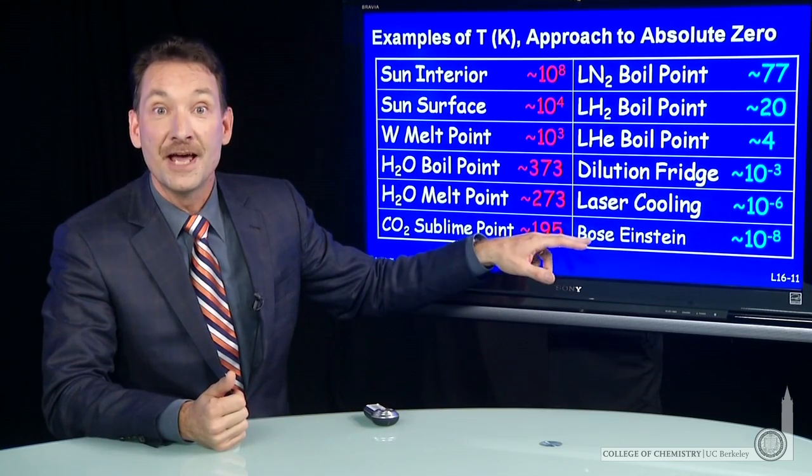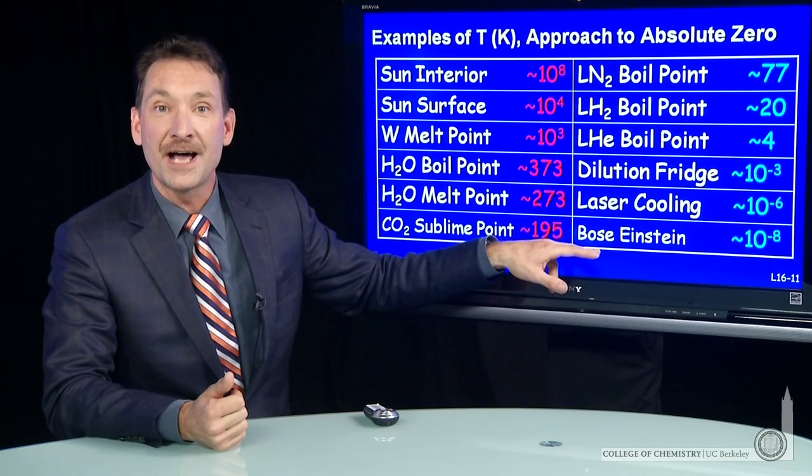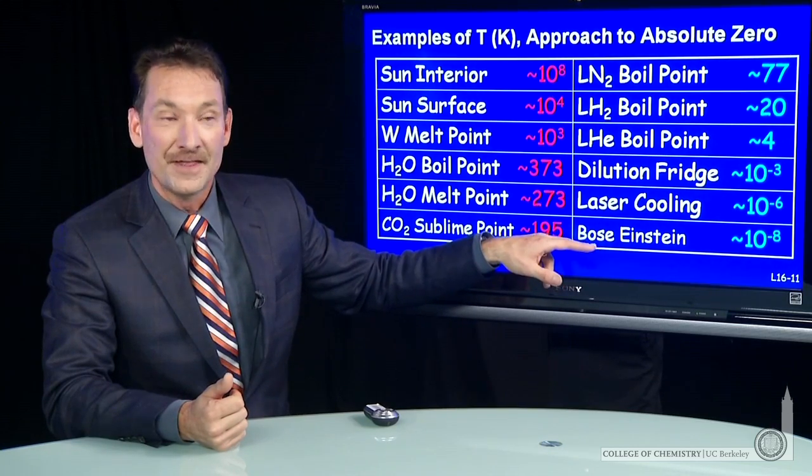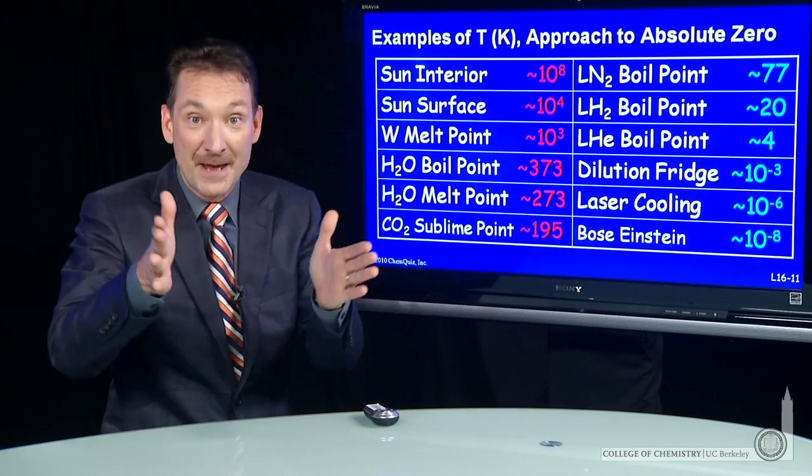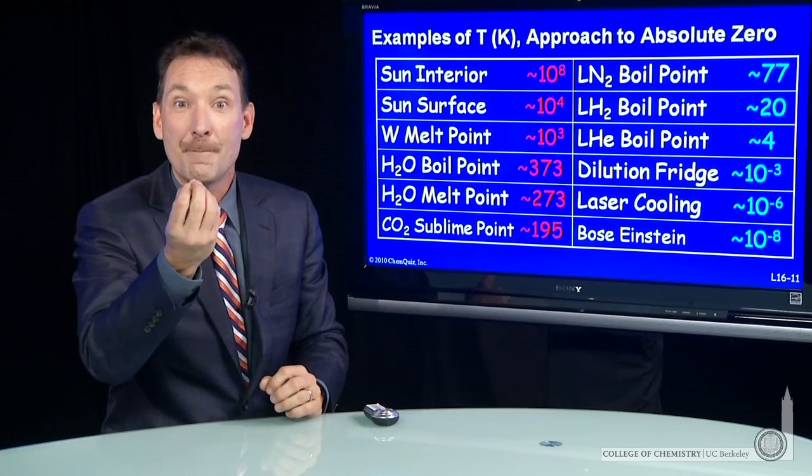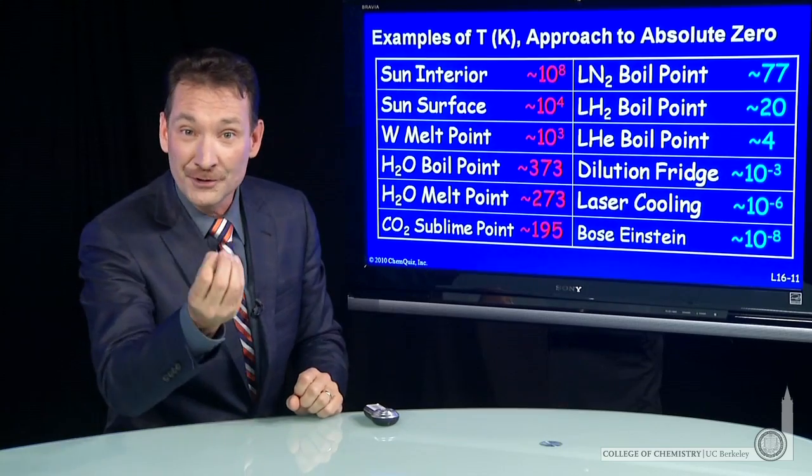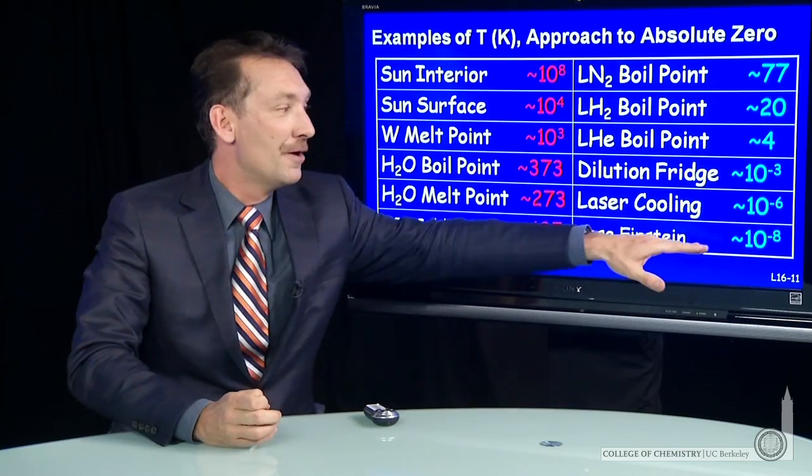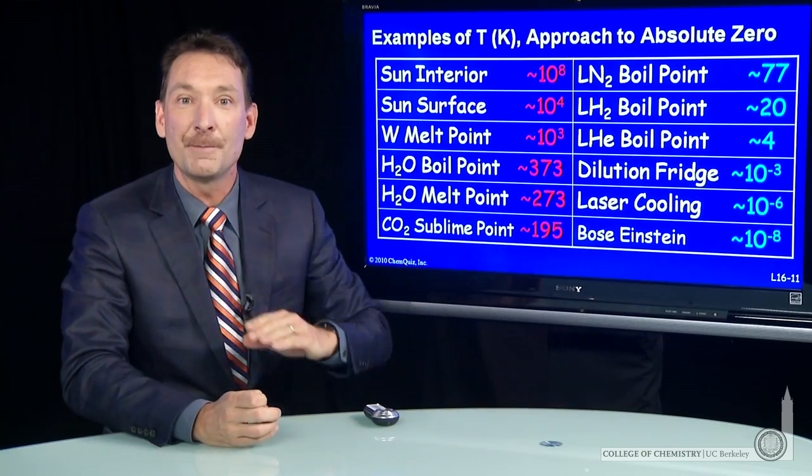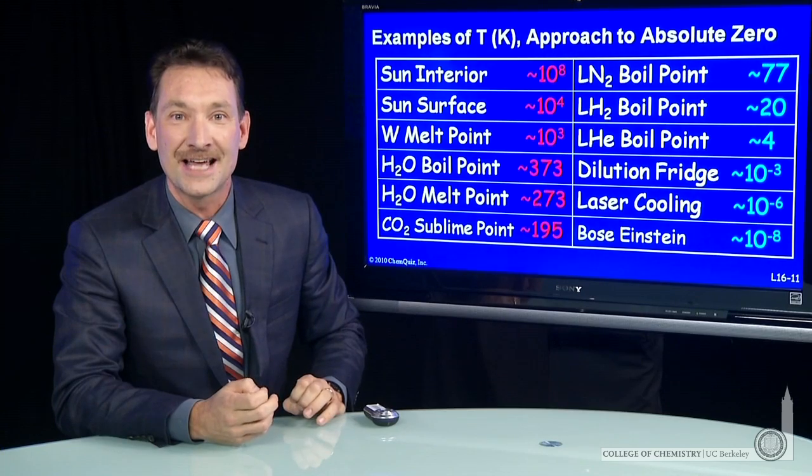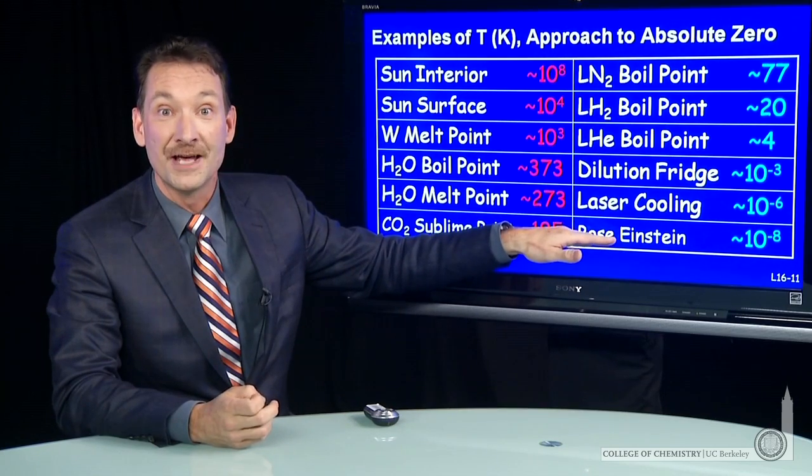Some of the coldest temperatures ever achieved are in a Bose-Einstein condensation. That's where you do laser cooling and magnetic trapping and get molecules to virtually stop, in this case, atoms of beryllium, to virtually stop in a sample and an effective temperature of 10 to the minus eighth Kelvin, one of the lowest temperatures ever achieved.